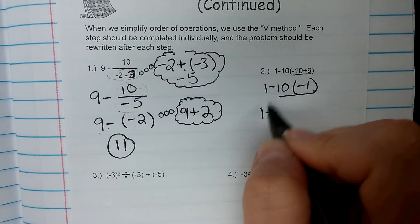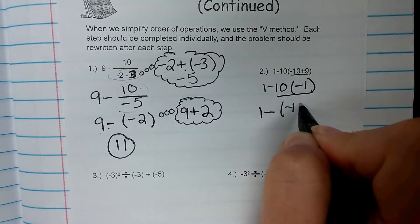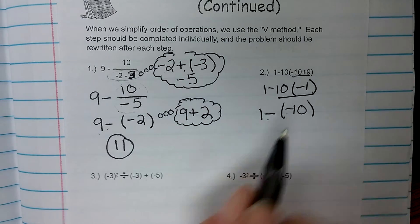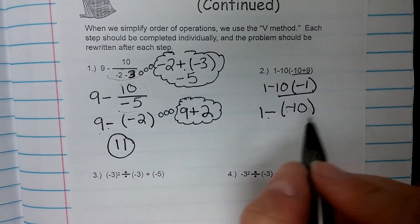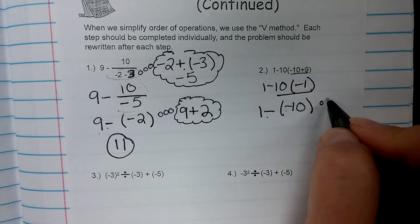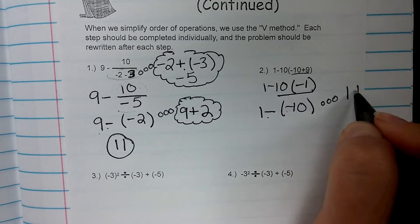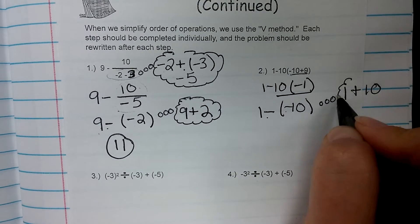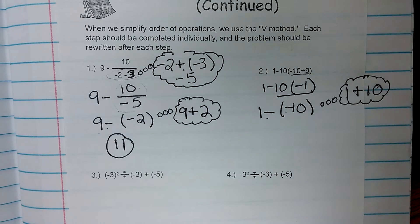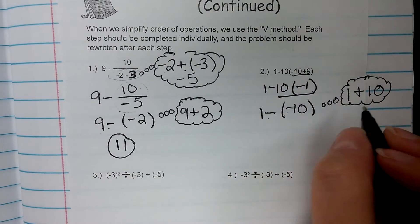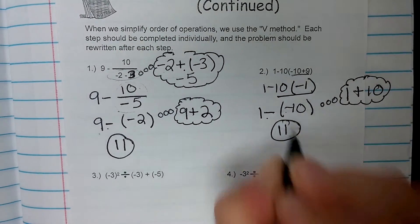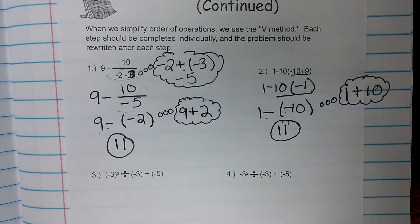We copy everything else straight down. So 1 minus negative 10. Minus a negative, just like we saw over here, is the same thing as adding a positive. So we can think about this as 1 plus 10. Again, if you need to write that step down, I would highly recommend it. So we think 1 plus 10, and for the second time, our final answer is 11.